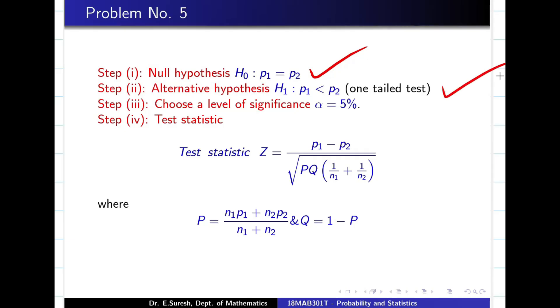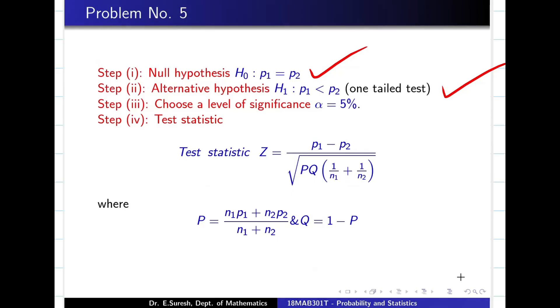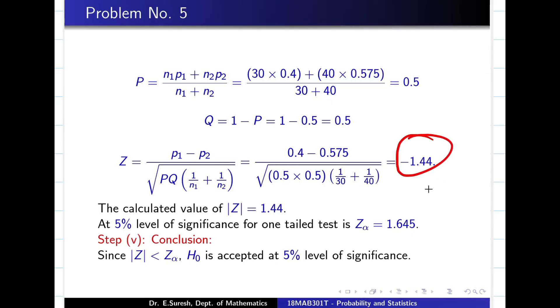Null hypothesis P1 equal to P2. Alternate hypothesis P1 less than P2, because novel technique I have to prove it is better than the proven technique. Substitute P1, P2, N1, N2. Capital P obviously is not given. So using N1, P1, N2, P2, substitute and find capital P value. Hereafter nothing, this is the same story. Substitute the value, find mod Z. Alpha value at 5% level is going to be 1.645 since it is one-tail test. Comparing these two, I can say mod Z is less than Z alpha. So accept H naught. Question data are very important: N1, P1, N2, P2, whether it is two-tail or one-tail, alpha which person you choose.